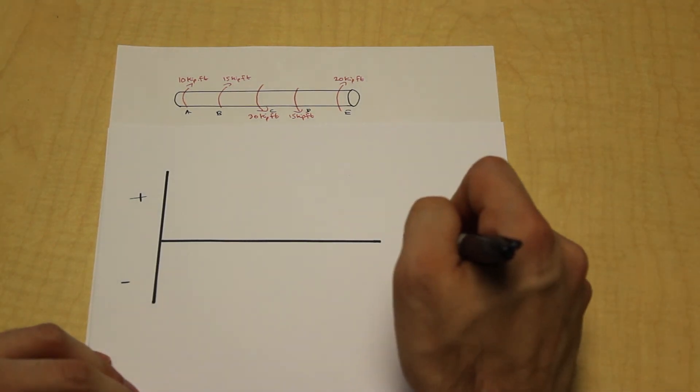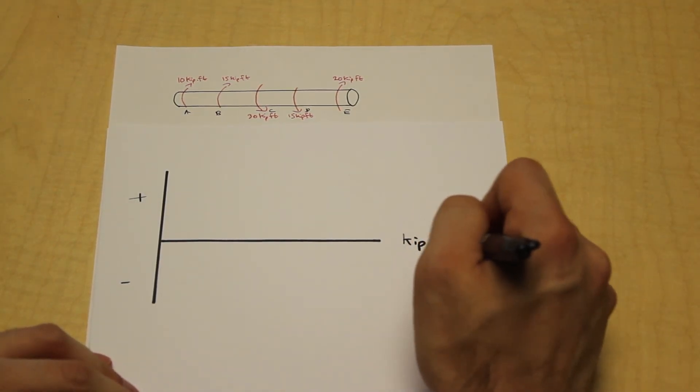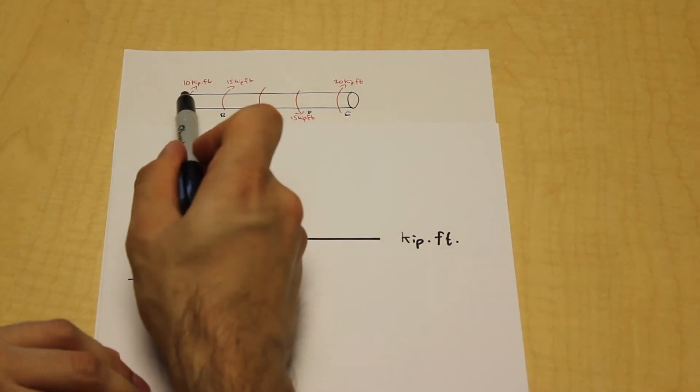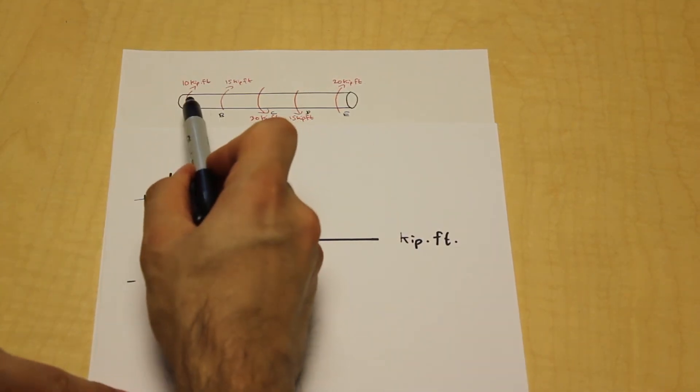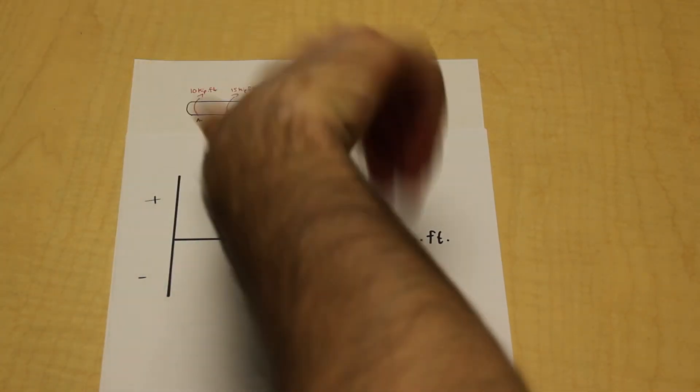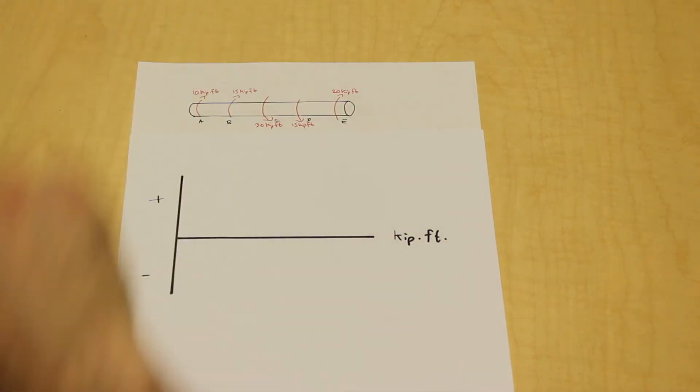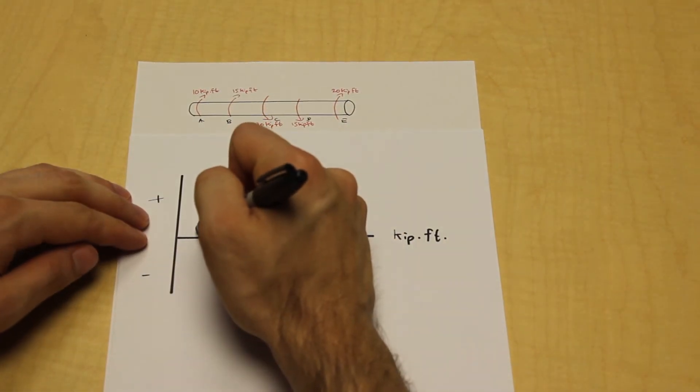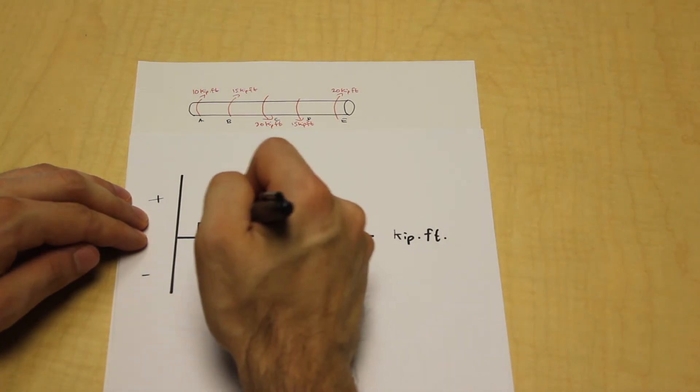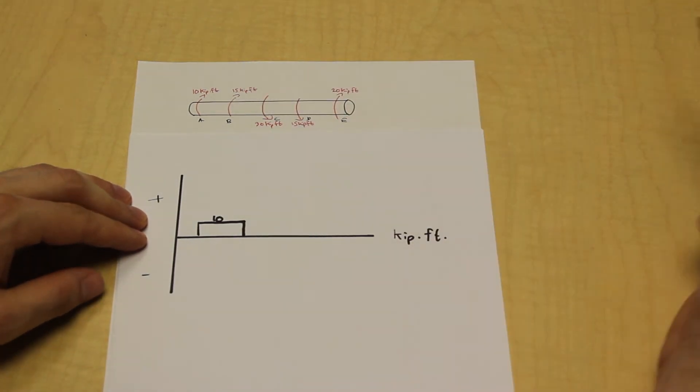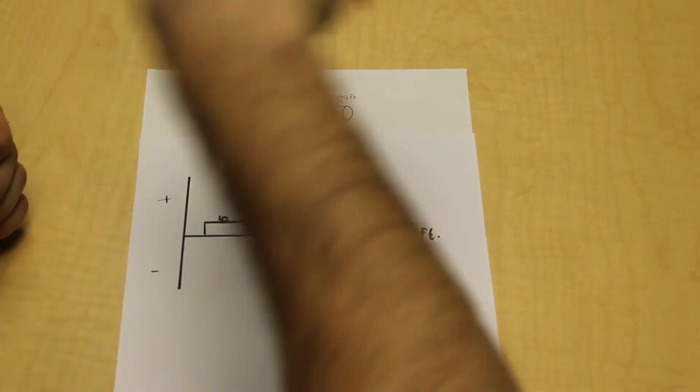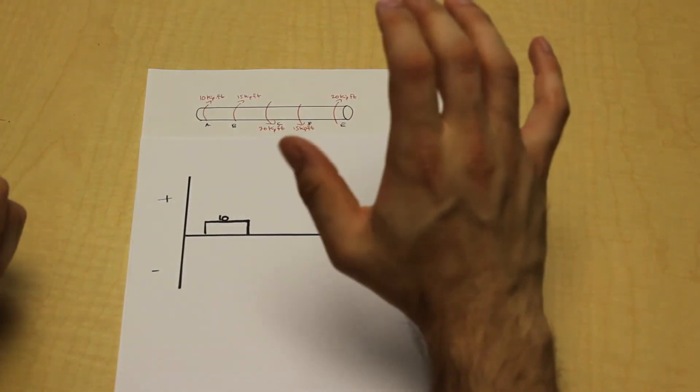Let's begin. We have a positive 10 kip-feet torque at point A, so we're just going to draw that there, and that's going to be 10. Now at B we have 15 kip-feet, also positive, same direction, right, clockwise.